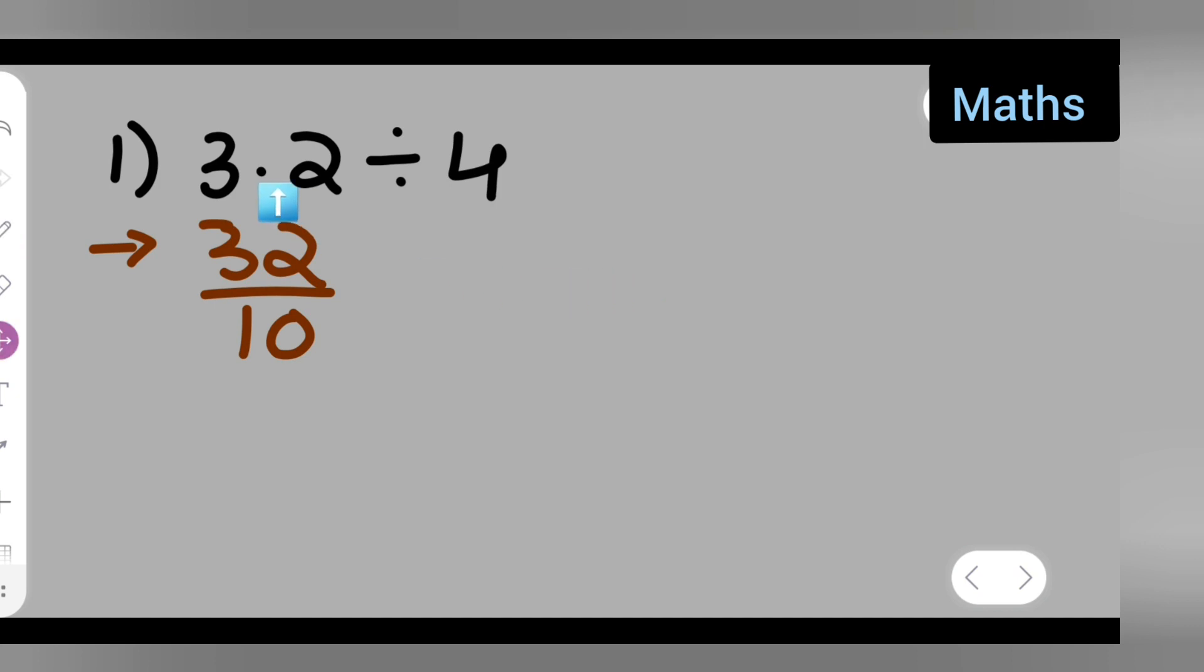So write down 32 over 10 divided by 4. Basically, now this is equal to 32 upon 10, and I have to divide it by 4, so you'll have to multiply it with the reciprocal of 4, which means that 1 upon 4. 4 ones are 4, 4 eights are 32.